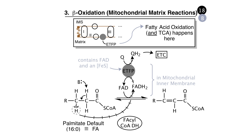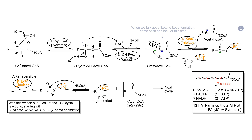Now let's look at Panel C. In the next step, water is added to the C3 carbon of the enoyl coenzyme A, and the resulting product is a 3-hydroxy fatty acyl coenzyme A. We've seen oxidation of alcohols like this before — for example, malate being oxidized by malate dehydrogenase to oxaloacetate. The hydroxyl group is converted to a keto functionality, and hydride transfer goes to NAD+ to form NADH. The enzyme that does this is 3-hydroxy fatty acyl coenzyme A dehydrogenase. At this point, we have generated one FADH2 and one NADH in the overall beta-oxidation cycle.